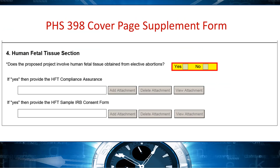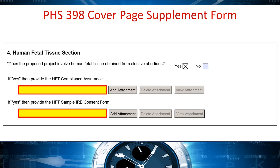A new human fetal tissue section was added to the PHS 398 cover page supplement form. You must answer the question: does the proposed project involve human fetal tissue obtained from elective abortions? And if yes, provide two attachments: the HFT compliance assurance attachment and the HFT sample IRB consent form. These changes allow NIH to accurately identify applications proposing the use of human fetal tissue and help applicants provide the required information.